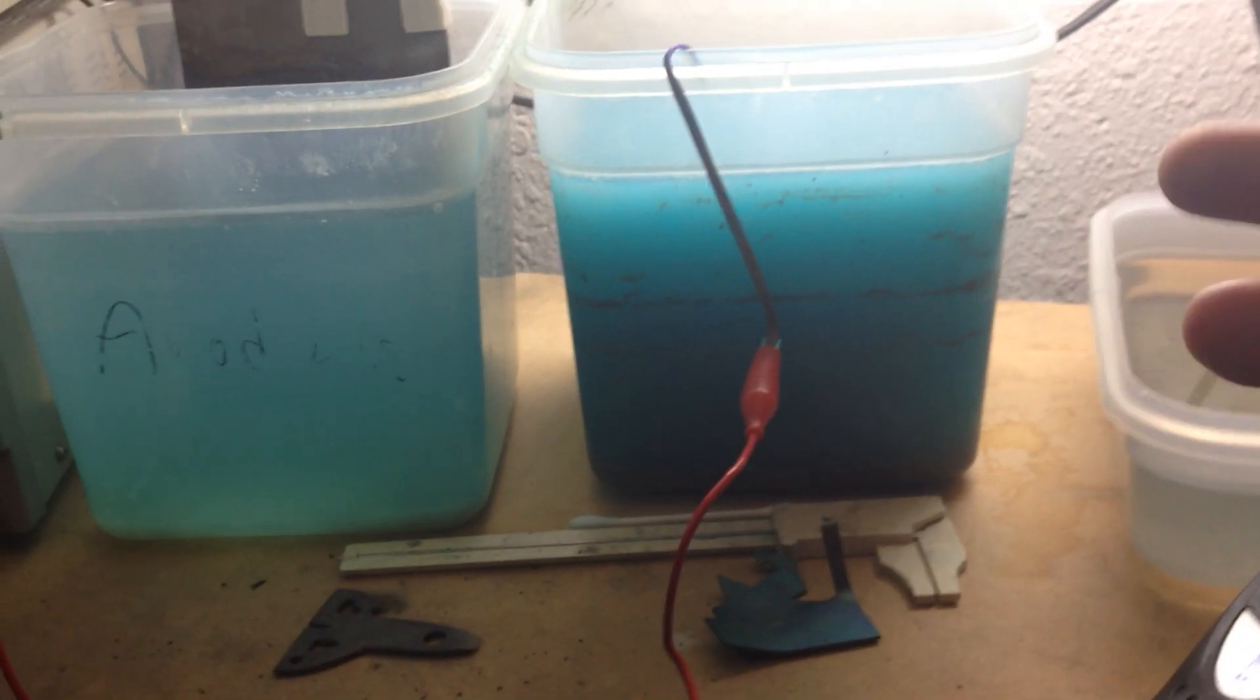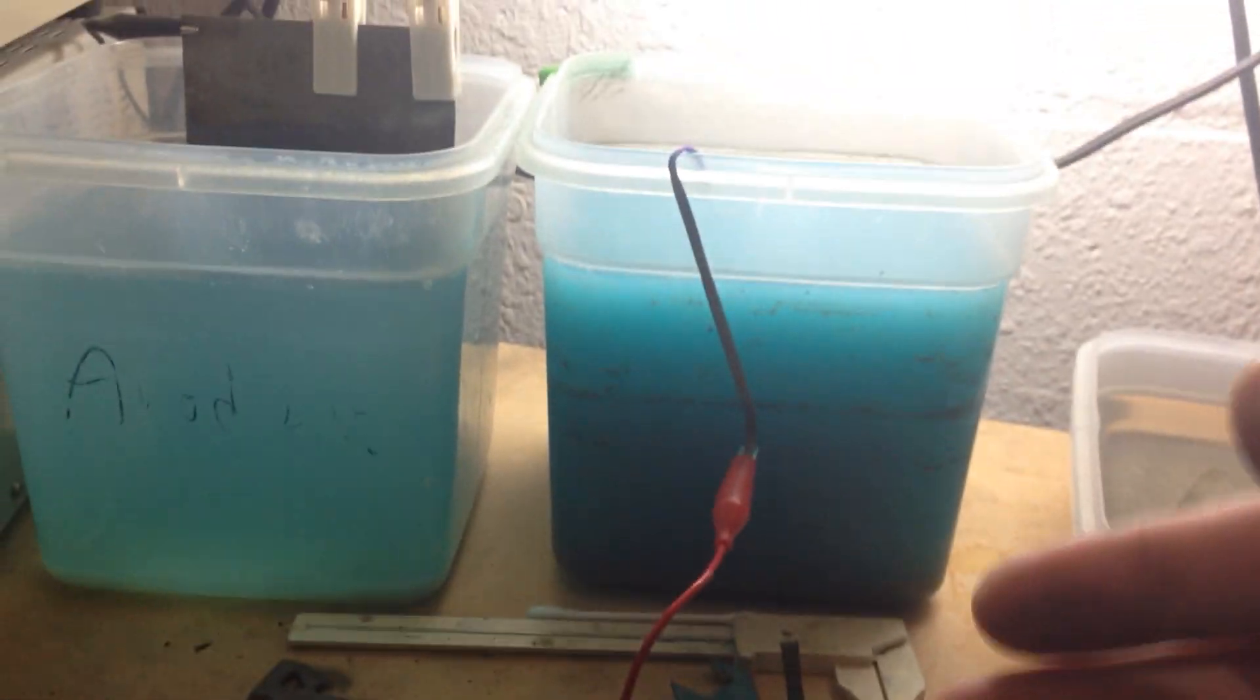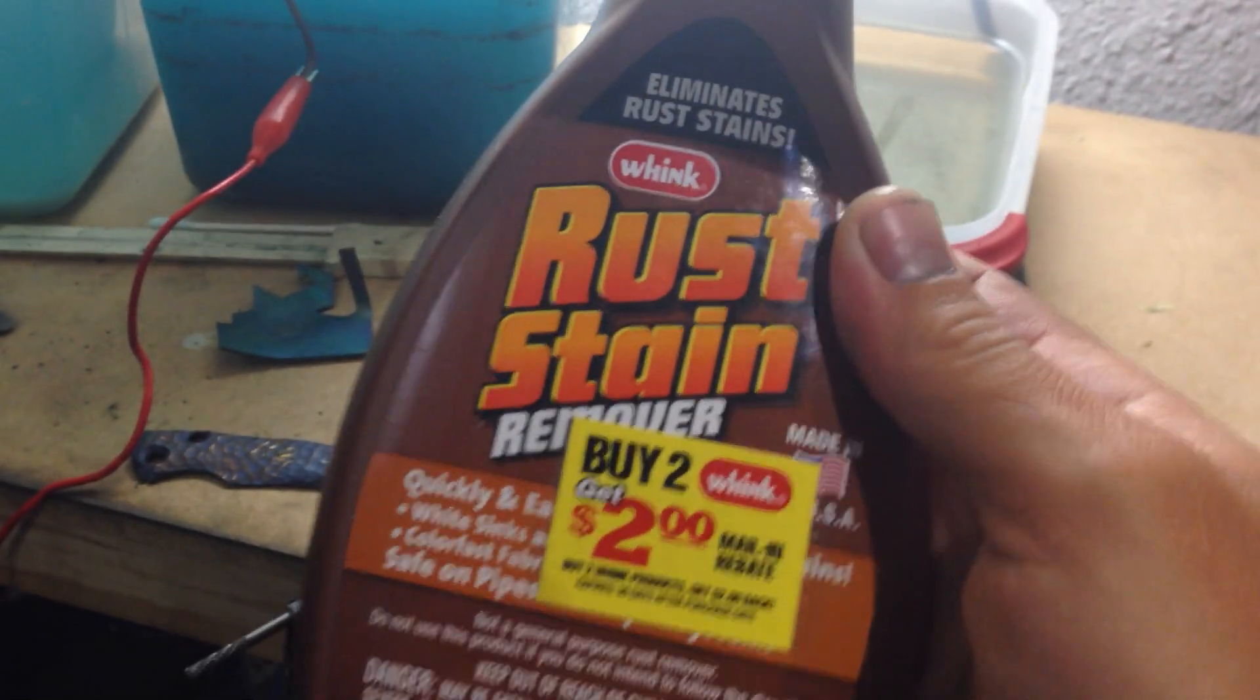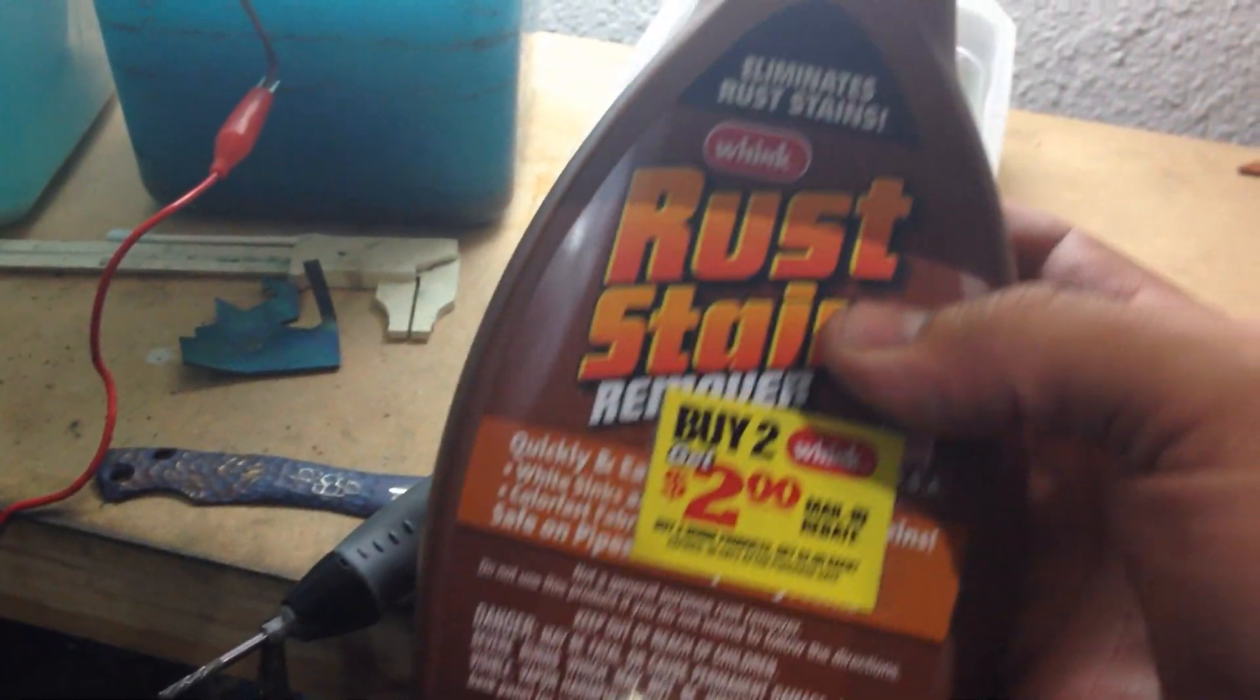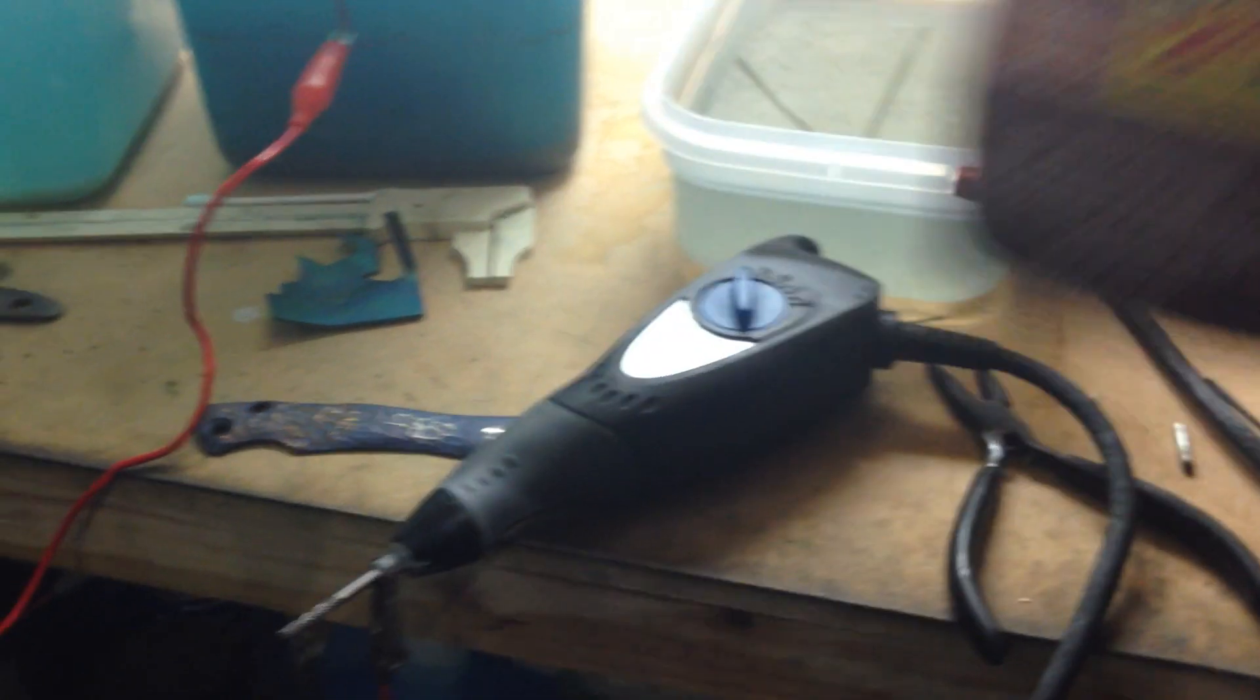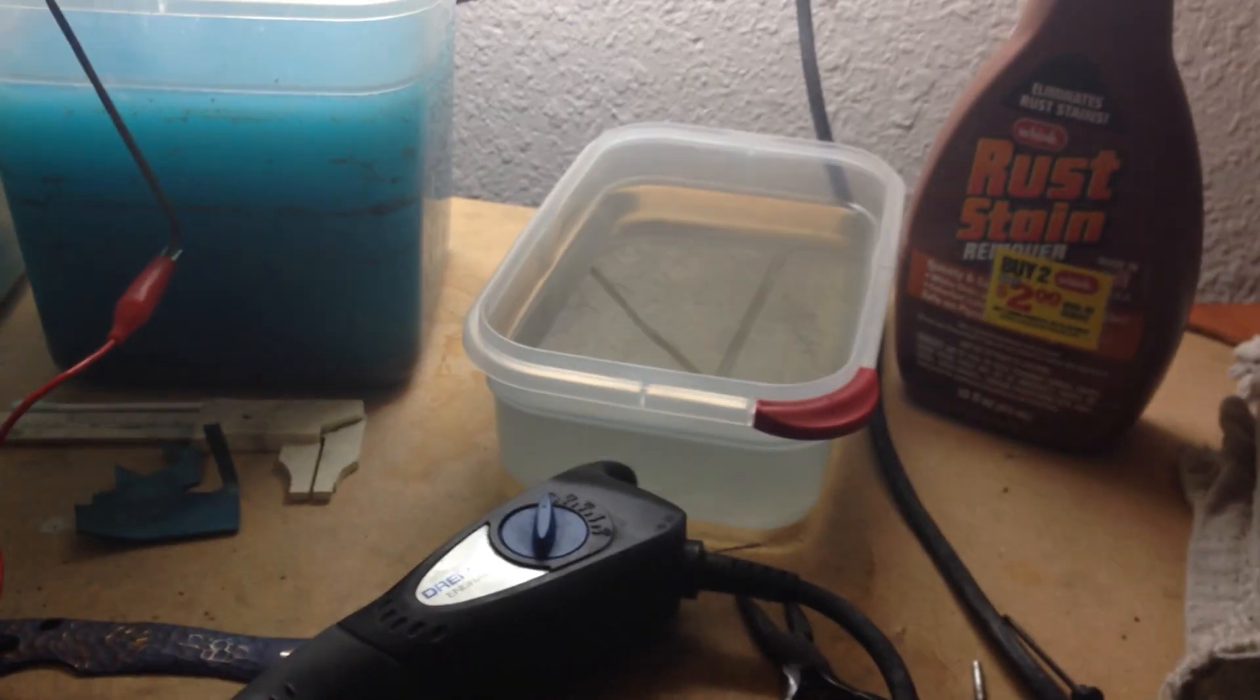Just like when you clean windows, it removes oils from the titanium before and after you work with it. An important new step is this rust and sand remover from Wink. It contains hydrophoric acid. Hydrophoric acid is one of the few things that reacts with titanium.